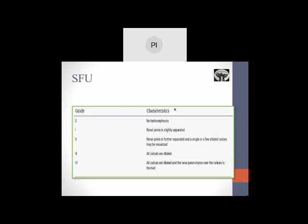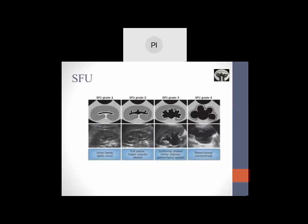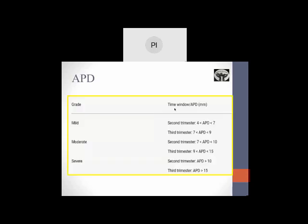Grade 0 refers to no hydronephrosis, which is normal. Grade 1 is a renal pelvis which is slightly separated. Grade 2 is where the renal pelvis is separated with few dilated calyces. In grade 3, all calyces are dilated, and in grade 4, in addition there are renal parenchymal thinned-out changes. This is the sonological and diagrammatic representation where we can see very clearly, especially in grade 4, there is gross dilatation of the calyces with parenchymal compromise. The APD system grades it based on millimeters of dilatation, divided into mild, moderate, and severe based on trimester. A cutoff usually taken of 10 and 15 mm in the second trimester and beyond as significant.